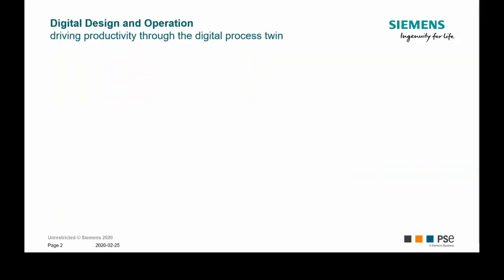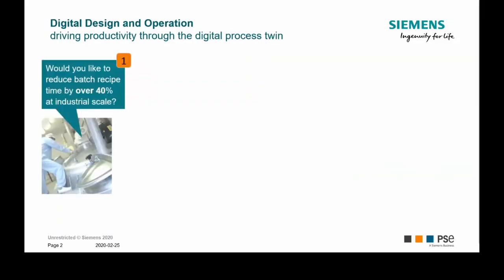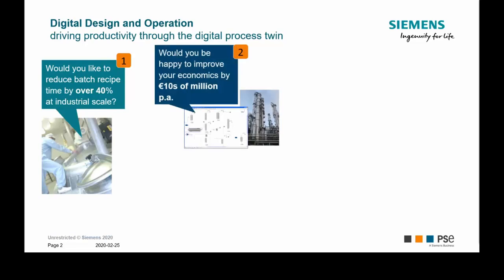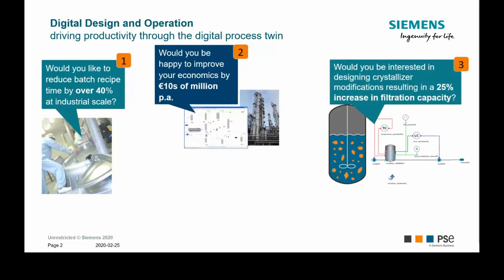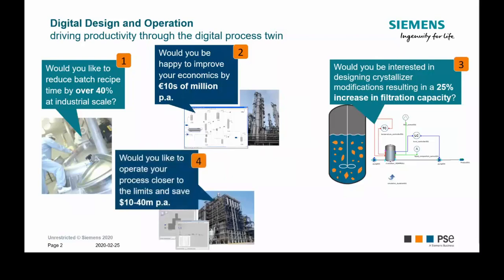I would like to ask you some questions. First of all, would you like to reduce your batch recipe time by over 40% at industry scale? Or would you like to improve your economics by tens of millions per year? What would you say if a design modification results in a 25% increase in filtration capacity, or by operating your plant closer to the limits, saving 10 to 40 million per year?